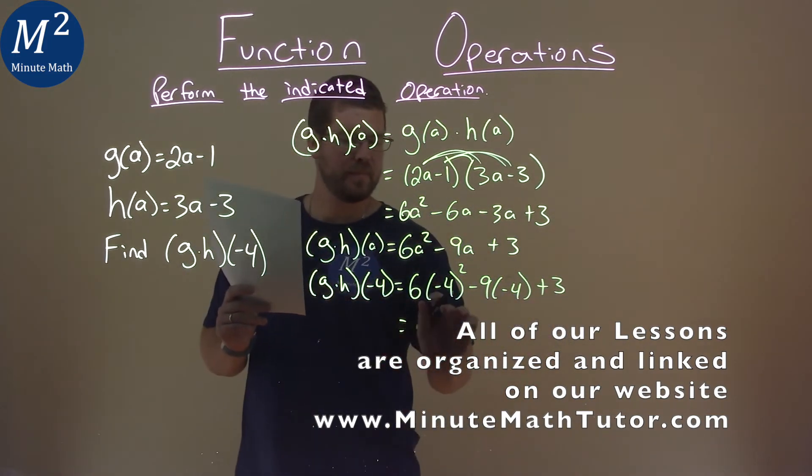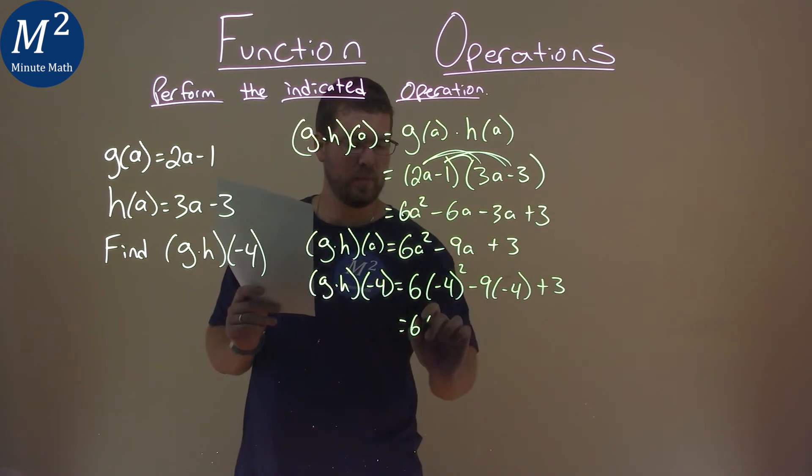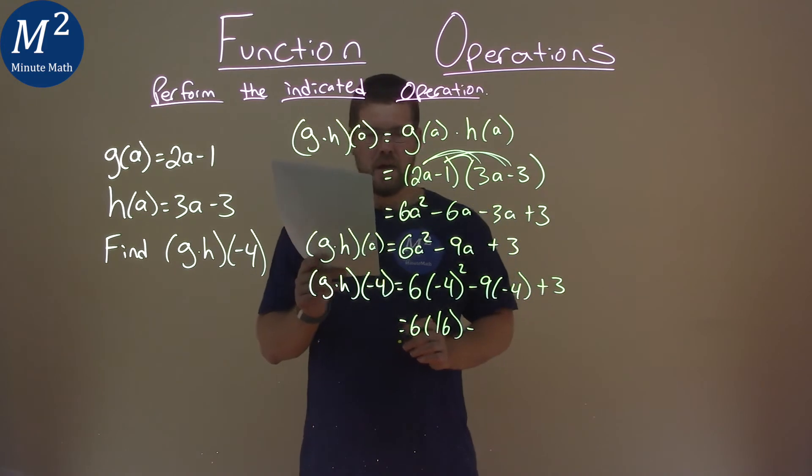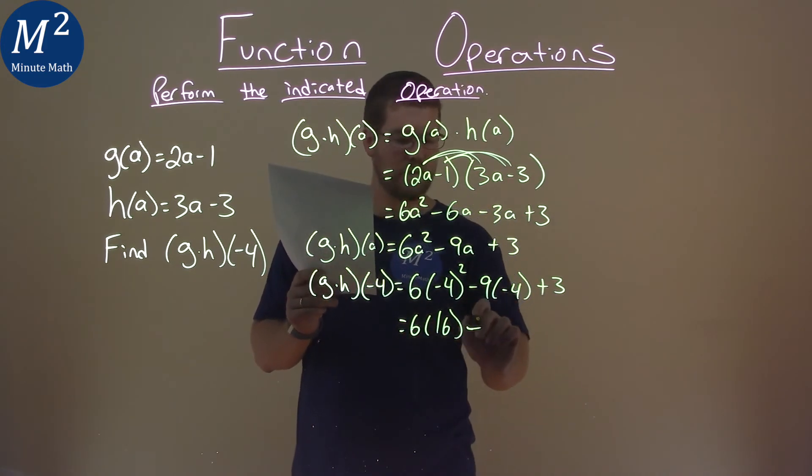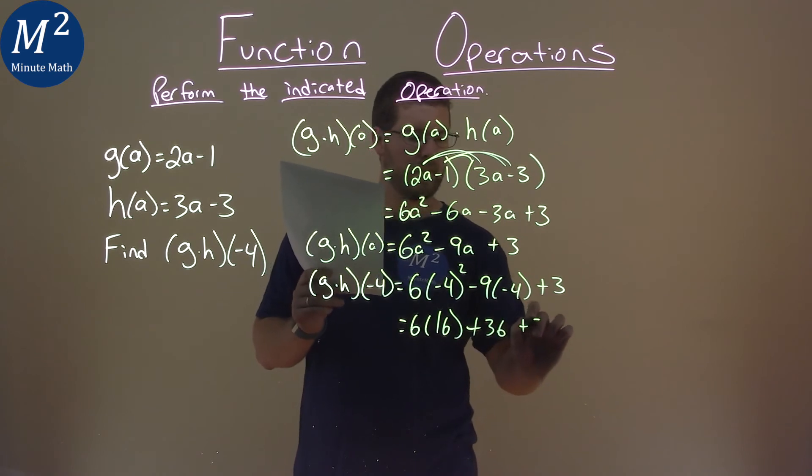Simplify where we can. We have negative 4 squared, which is positive 16. And negative 9 times negative 4 is positive 36, and then plus 3.